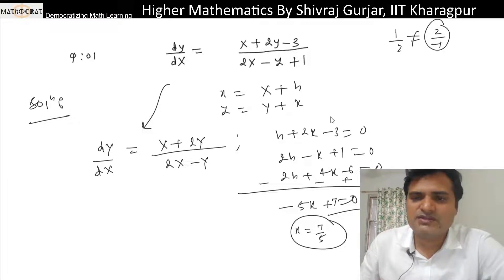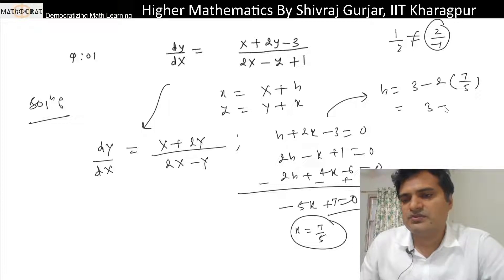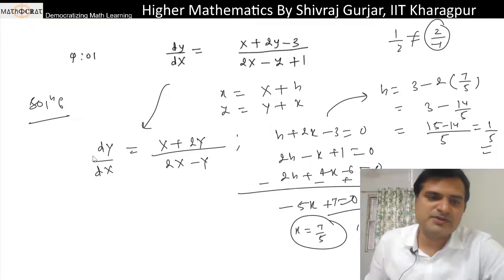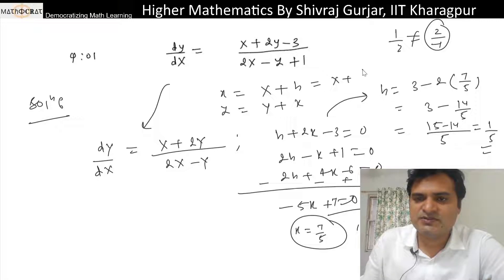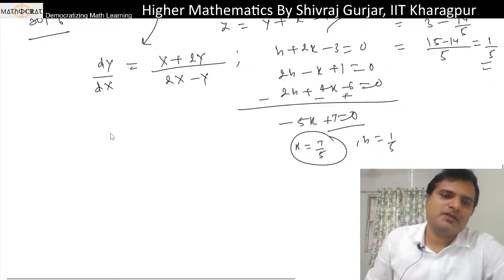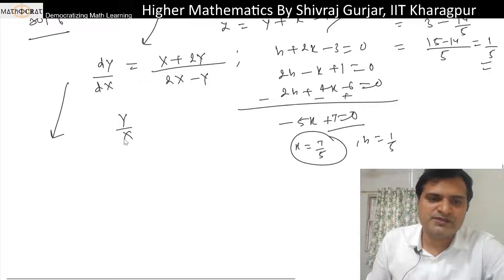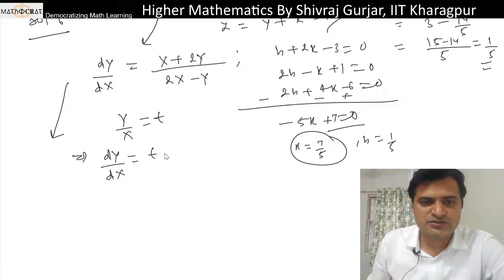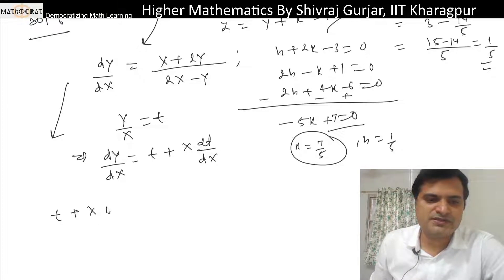So our substitution is: small x = capital X + 1/5, and small y = capital Y + 7/5. Now we can solve the homogeneous equation by putting capital Y/X = T. So dY/dX = T + X·dT/dX, which equals (1 + 2T)/(2 - T).